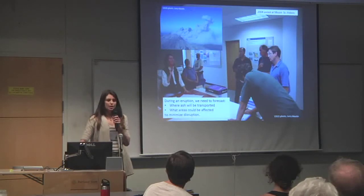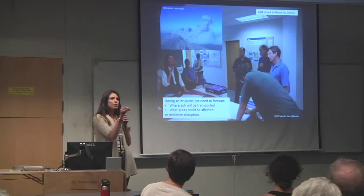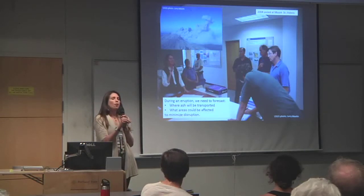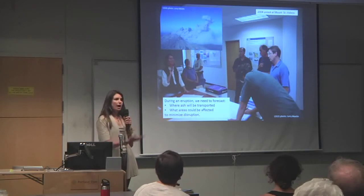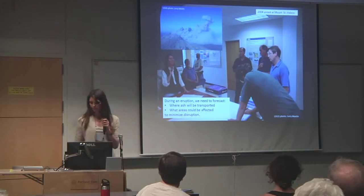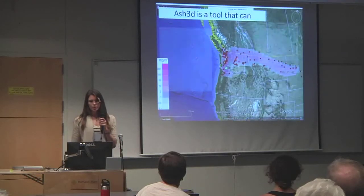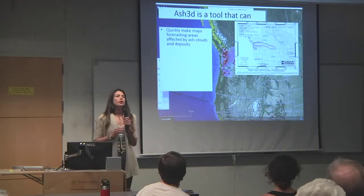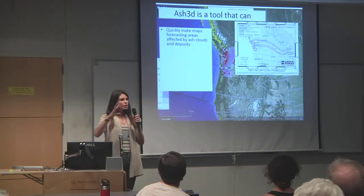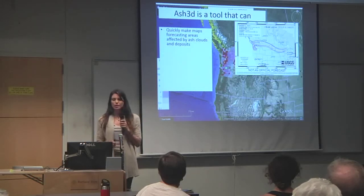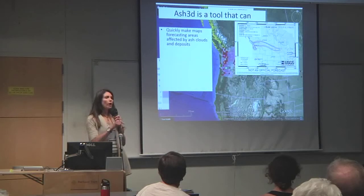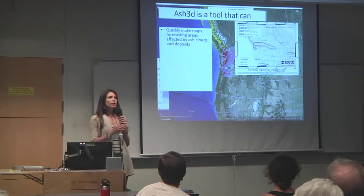Specifically, where is the ash going to go, and which specific areas are going to receive ash? These are the targets for an operational mode of ash dispersal forecasting. ASH3D — the whole structure of the code is to work quickly to develop a forecast of where the ash is going to go given certain source parameters in a given wind field.